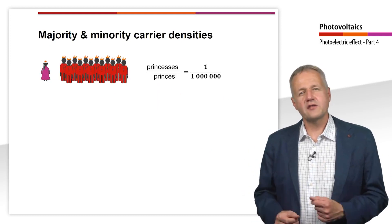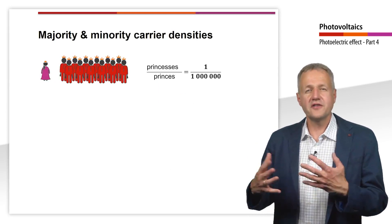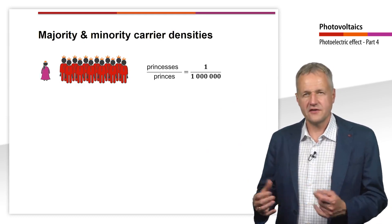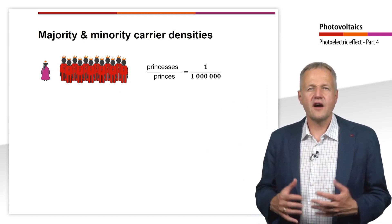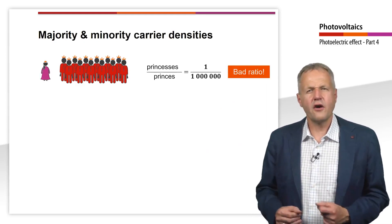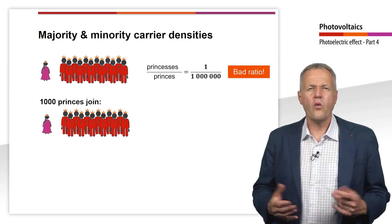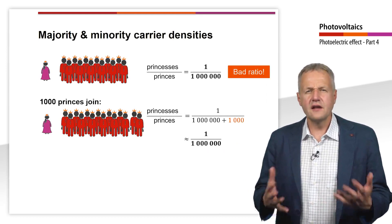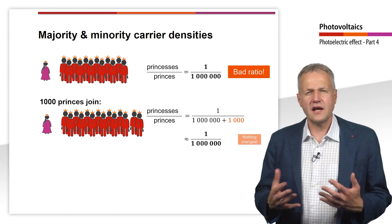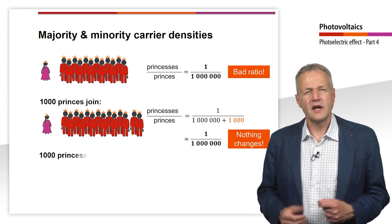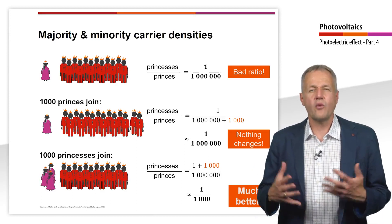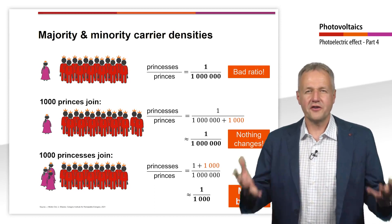This can be illustrated by a comparison with princes and princesses. There are one million times more princes than princesses — the princes are the majorities, the princesses are the minorities. If 1,000 princes are added, there are still one million times more princes than princesses, so the ratio does not change much. If, on the other hand, 1,000 princesses are added, then the ratio becomes 1 to 1,000, which is already much better.